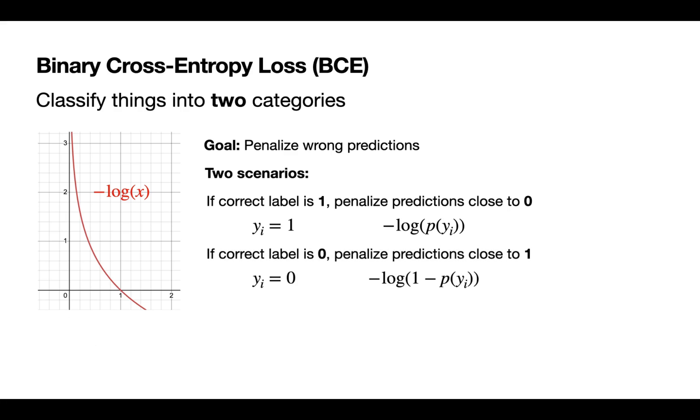Similarly, we have the other case when the correct label is zero. Now we really want to use negative log of one minus our predicted outcome. In this case, let's say the correct label is zero and we predict zero, then negative log of one minus zero is going to be negative log of one, which again gives us zero, meaning it's a good prediction and a low penalty. But if we predict one when the correct label is zero, we're going to get closer to that negative log of zero again, making that a high penalty.